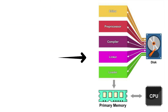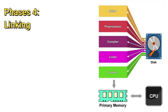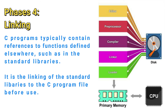Phase 4 is linking. C programs typically contain references to functions defined elsewhere, such as in the standard libraries. We are now going to link the standard library with our C program. The standard library serves as a reference to the functions that we are using. Therefore, in the C standard library there are several functions, and before we could use them, we have to link the library where they belong to.